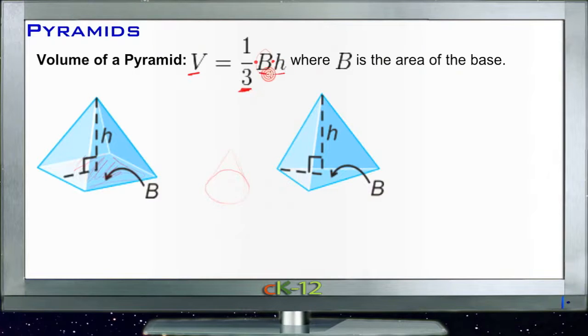So you could take base times height and then multiply by a third, or take a third of the area of the base times the height, or a third of the height times the base. So that's kind of nice because it means if one of these numbers happens to divide evenly by three, that's when you multiply by a third.